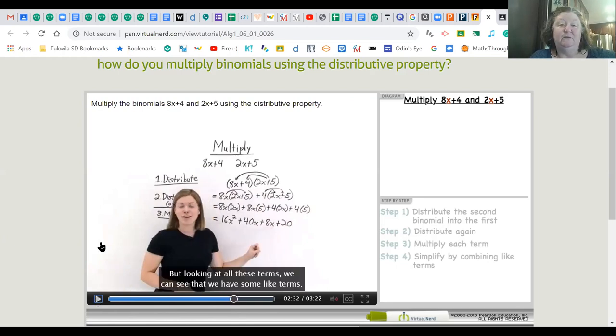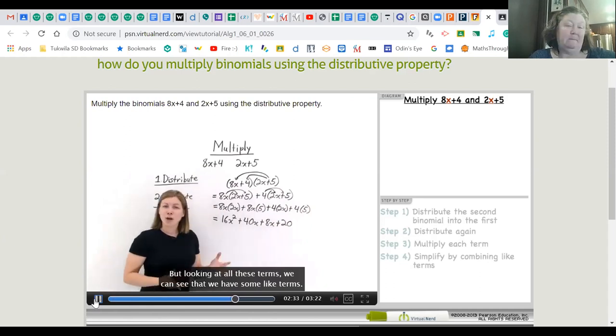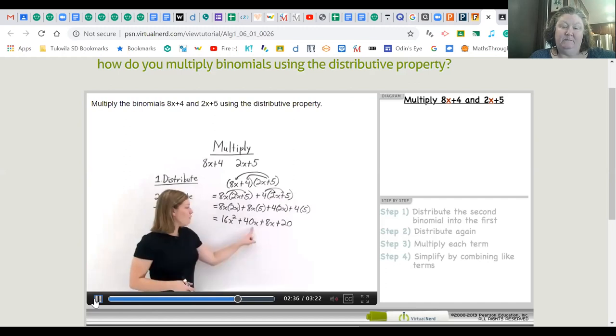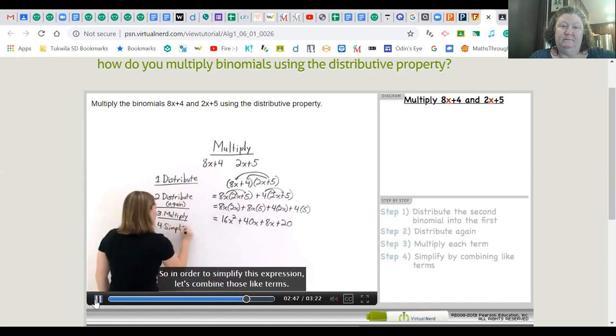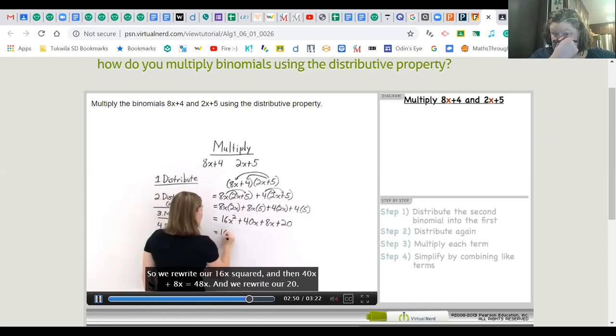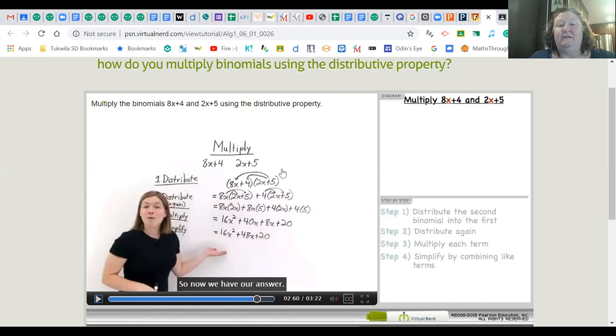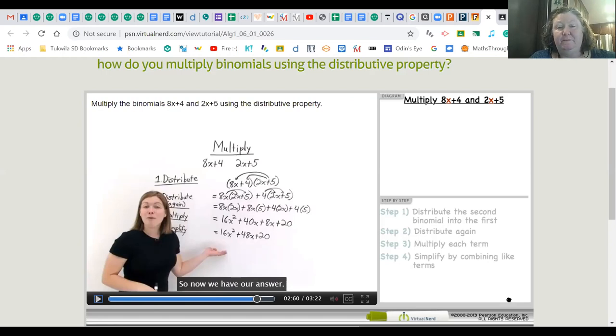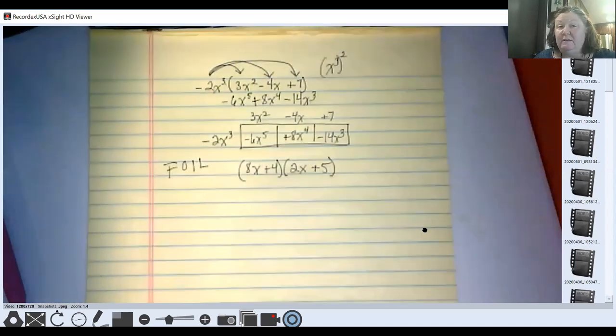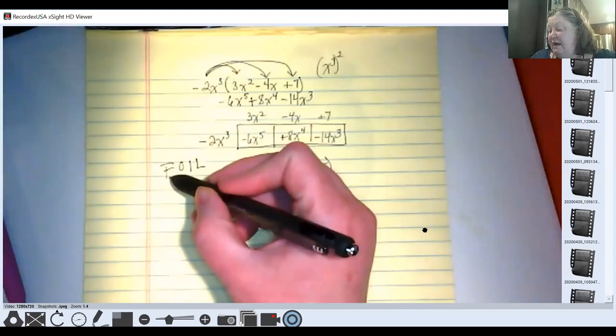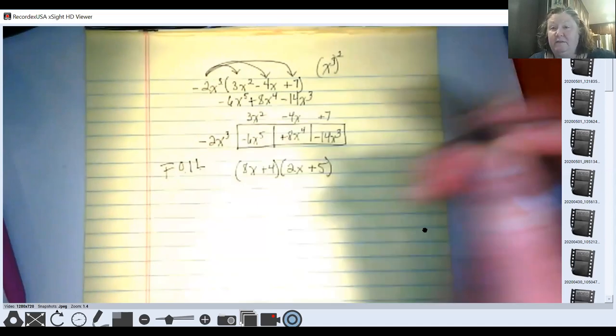So now that everything is distributed, she's going to multiply and we're going to end up with 8 times 2x is going to be 16x squared and you'll watch and see what happens with the next few. So if you notice here, we do have some like terms. They happen to be in the middle next to each other here. So all that she has left to do is to add 40x and 8x. I'm going to leave it there.